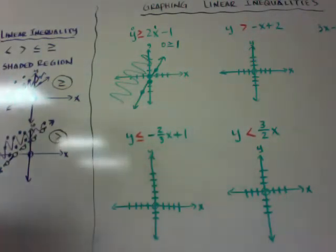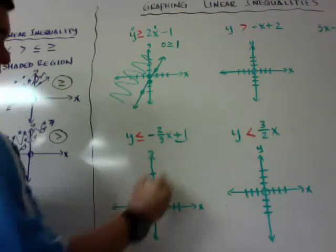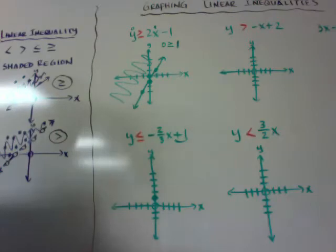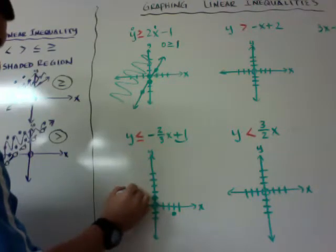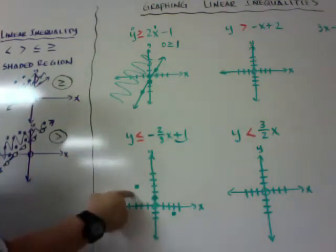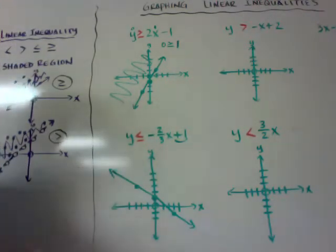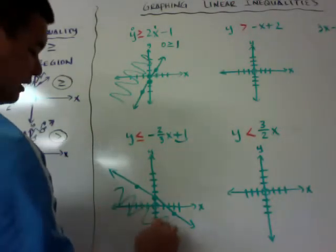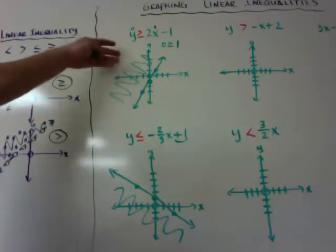Here's another quick one. y is less than or equal to negative two-thirds x plus 1. Start at plus 1, which is the y-intercept. Go down 2 and over 3, and up 2 and over 3. Because it's or equal to, I use closed dots and a solid line. According to my shortcut, less than or equal to means I shade below. You can see how I just shade it simply like this.